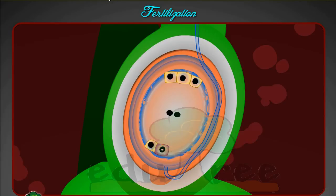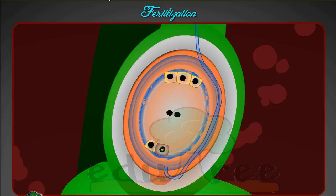One of the two sperm cells fertilizes the egg cell, producing the diploid zygote which will become the embryo. The other sperm cell moves up and fuses with both of the central nuclei, forming a triploid cell. This unusual triploid cell develops into an endosperm and serves as the embryo's food supply during early development. The process of fusion of one male gamete with the egg and the other gamete with the secondary nucleus is known as double fertilization.